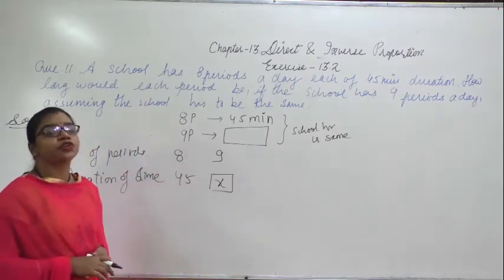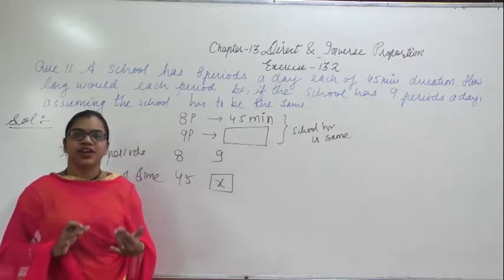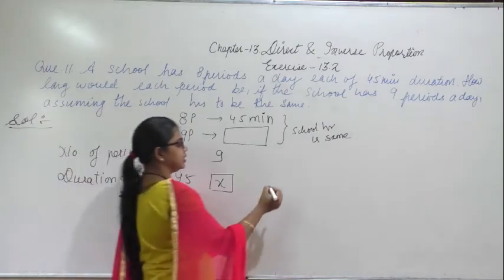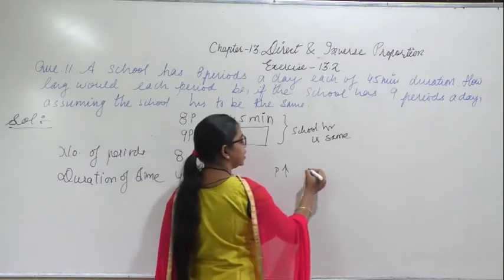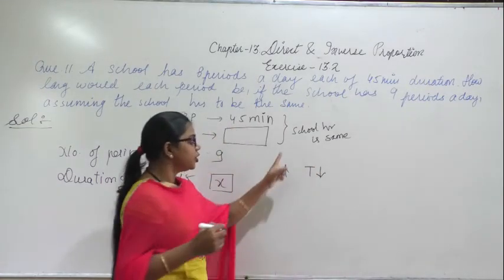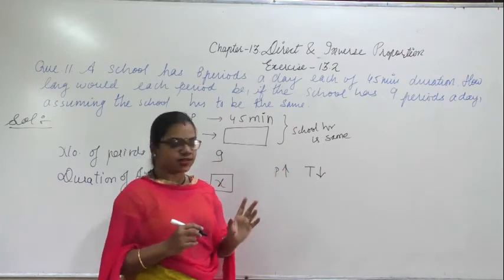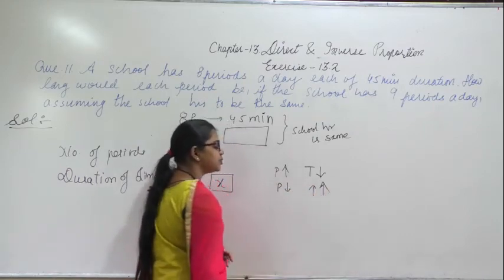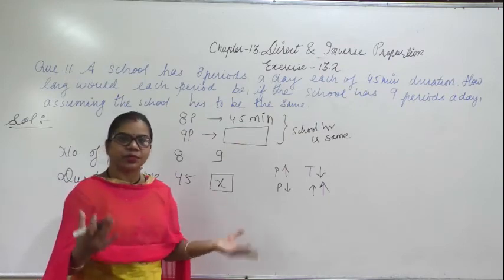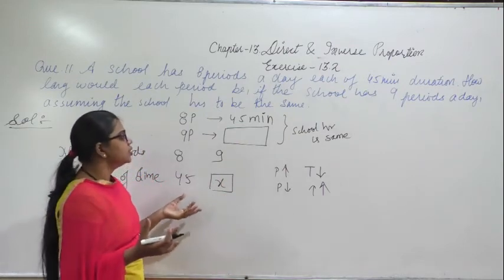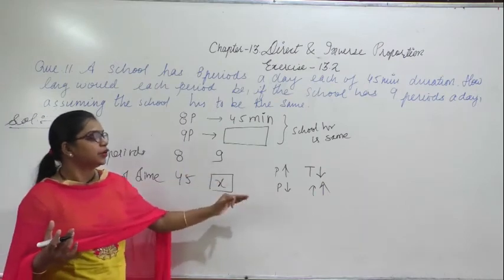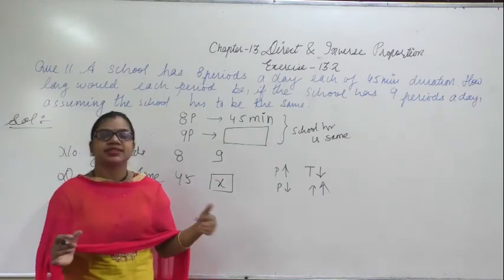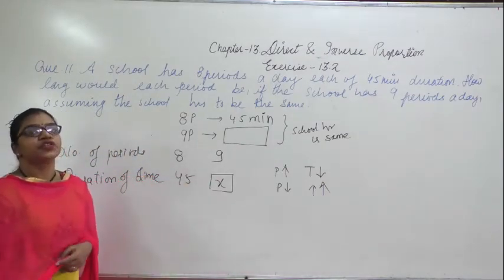You have to find out whether this question is of direct or inverse proportion. If you increase the number of periods, the time duration will decrease because you have the same school hours. If you decrease the number of periods, the time period will increase — if periods are less, you get more time per period. So period increases means time decreases; period decreases means time increases. This is the condition of inverse proportion.